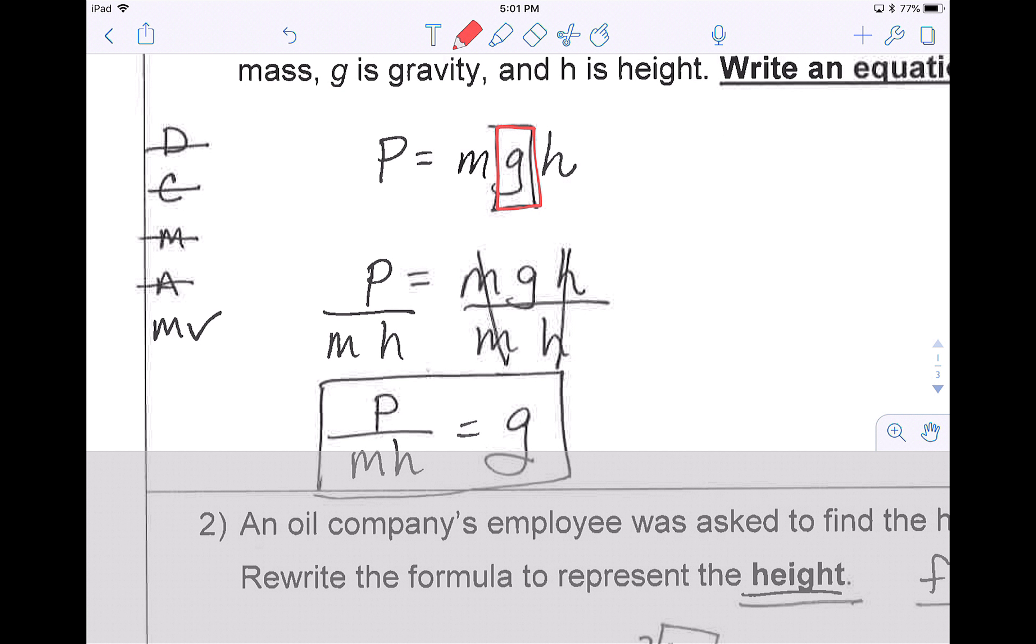Now when I look at g, there's nothing I need to distribute because there's no parentheses. There's nothing to combine because there's only one g, only one m, only one h, and only one p. There's nothing I need to move because I only have one box on one side. There's nothing to add or subtract because there's no addition or subtraction already listed.